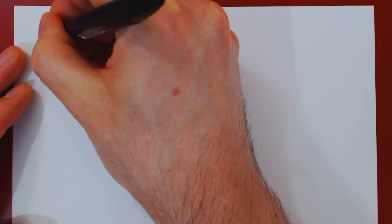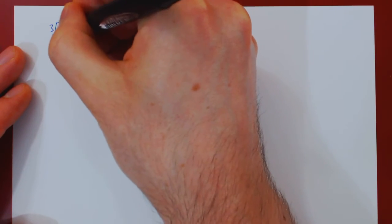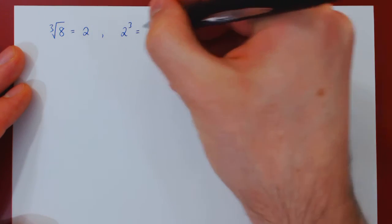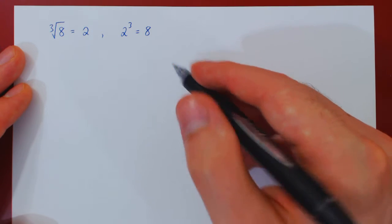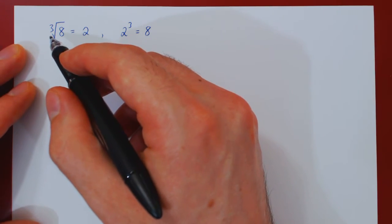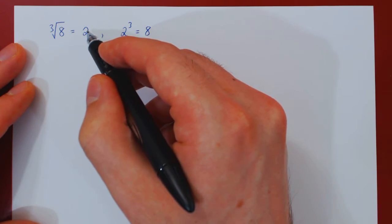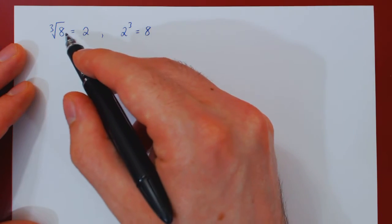Let's start with a very simple example, say the cube root of 8. Well the answer is clearly 2, since 2 cubed is equal to 8. 2 times 2 is 4, times 2 is 8. So when you ask for the cube root of 8, you're asking for some number whose cube will equal 8.